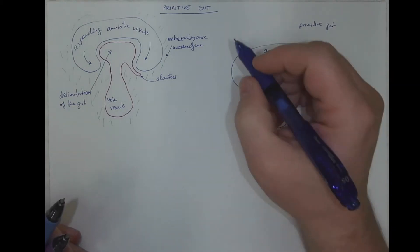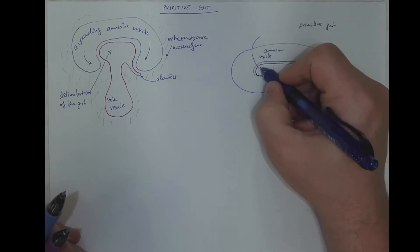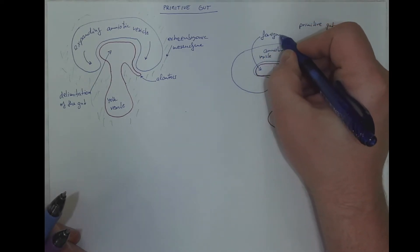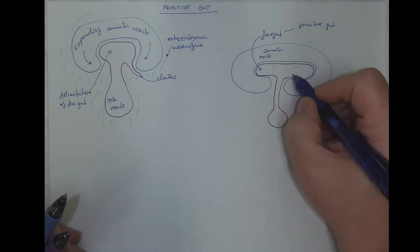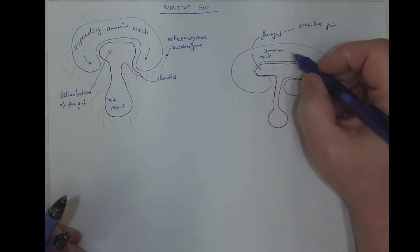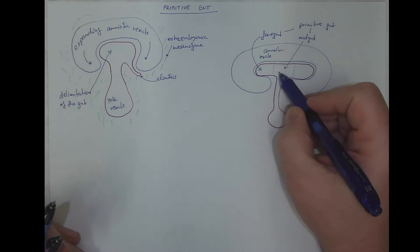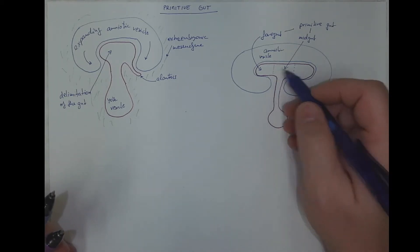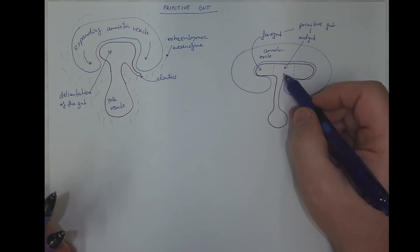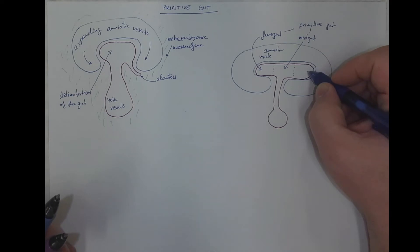The anterior part called foregut, the middle part called the midgut. The border between foregut and midgut being the hepatic diverticulum that will be explained later on when we discuss the development of liver. And the posterior part called hindgut.